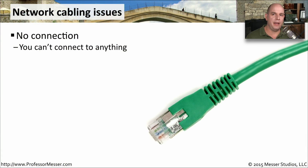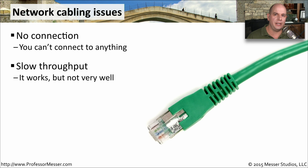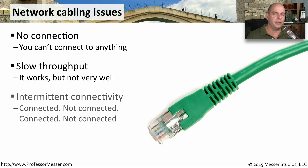If you're having a problem with your copper cabling, you might be suffering through a number of different kinds of symptoms. Maybe you're getting no connection at all — you're not able to see the network and obviously not able to connect to anything. Maybe you have a connection but the data you're sending is very slow, with bad throughput. Or maybe your connection is intermittently telling you that you're connected, then not connected, then connected again. This is obviously indicative of some kind of cable problem.